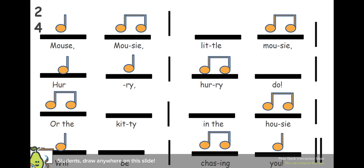Let's take a look. Number one, starting right here. Think of the word little. Little is how many sounds — one or two? Correct. It is two sounds, and so we would draw a ti-ti. How about do? How many sounds do you hear on the word do? If you said one, you are correct — that would be a ta. And let's do one more together. How many sounds do you hear in the word kitty? Correct, that is also two sounds, and we would draw a ti-ti there.